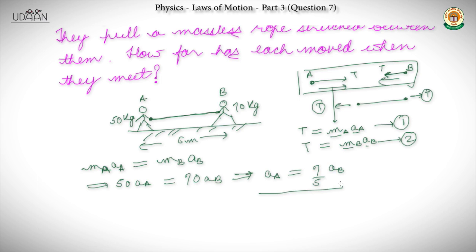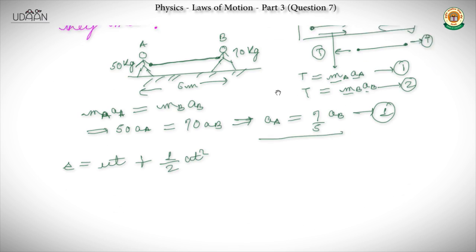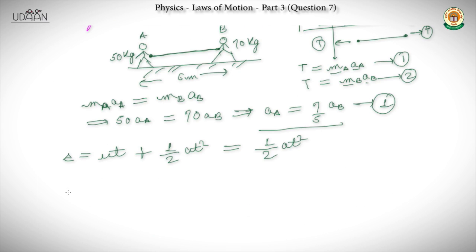For both cases we can use the equation s = ut + ½at². Since both start from rest (u=0) and travel for the same time t until they meet: distance moved by A = ½·aA·t², and distance moved by B = ½·aB·t².